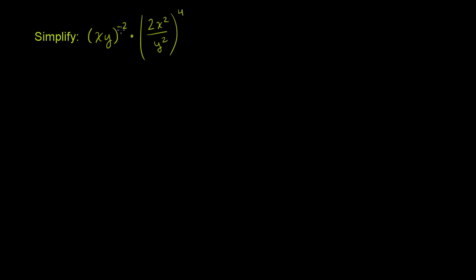Simplify xy to the negative 2 power times 2x squared over y squared to the fourth power. So let's see what we can do. Let's think about this part of our expression first. If I have x over y to the nth power, we know that this is the same thing as x to the n over y to the nth. So let's apply that right over here.